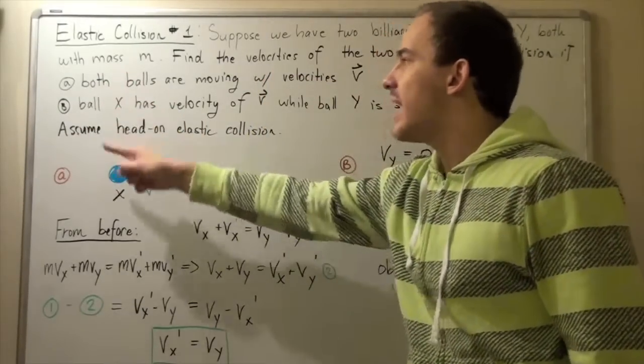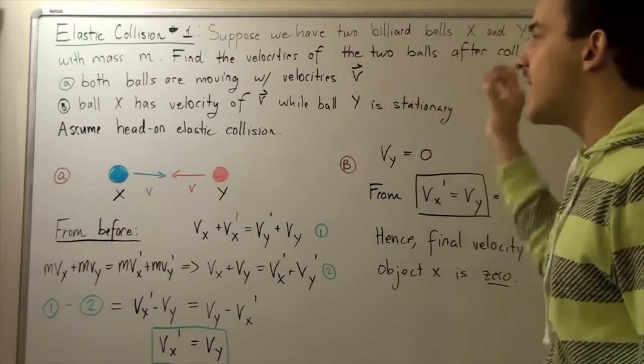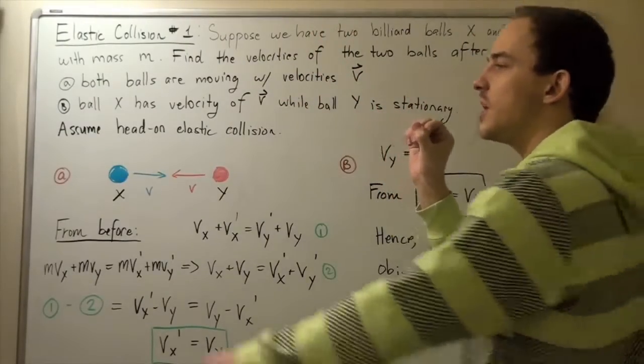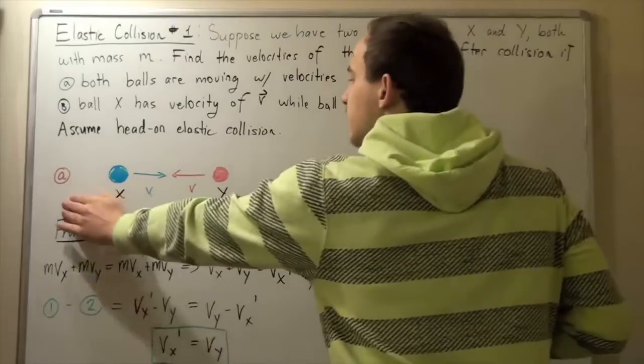And part B: ball X has a velocity of v while ball Y is stationary. So one ball is stationary and the other ball is moving directly at it. Let's look at part A.